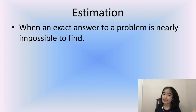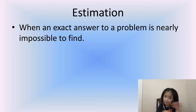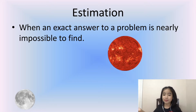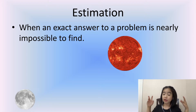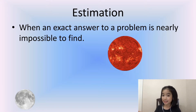The first question you might be wondering is: when do we use estimation? Estimation is used when an exact answer to a problem is nearly impossible to find. For example, if somebody asked you what is the distance between the sun and the moon, we don't know the exact answer, but we can say it is around 150 million kilometers. That is an estimation.